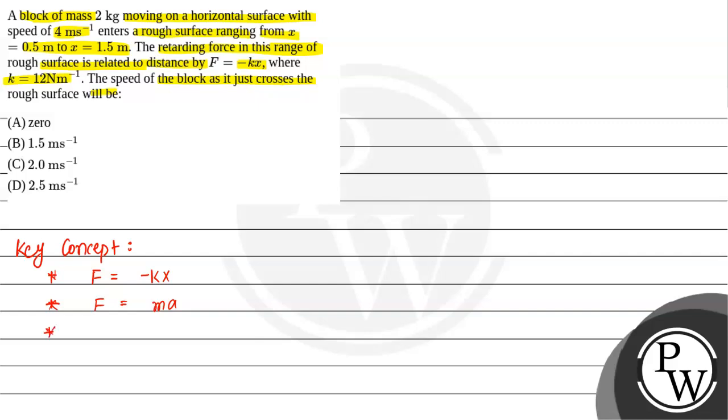So since this is a function of position only, in that case acceleration in differential form is v times dv over dx. When it's a function of time, then this is equal to dv over dt, but here it's a function of position. So here we will use this formula. And then we will try to solve this question. So let's move to the solution part.